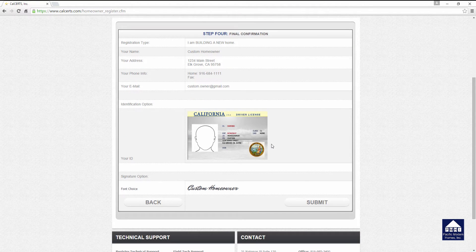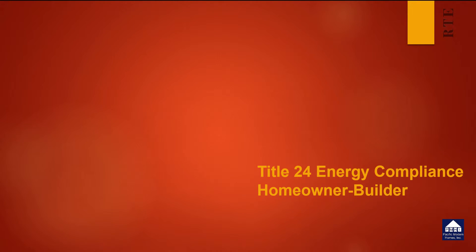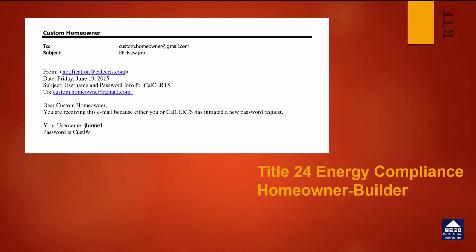At the final confirmation stage, you'll see the same information as before, along with a picture of the ID you scanned and the font choice for your signature. If all of this is correct, click the Submit button. Once you click Submit, you have successfully created an account with CalCERTs. In a few hours to a few days, you will receive an email with your username and password. Please keep this information in a safe, easily recoverable location — you will need it to log on to the CalCERTs website to digitally sign the calculations and to complete forms during the construction phase.